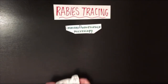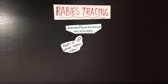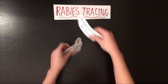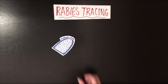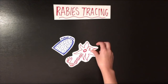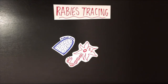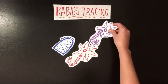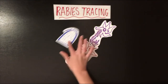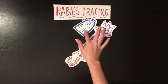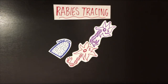Through immunofluorescence microscopy, monosynaptic rabies tracing involves using a genetically modified rabies virus which spreads slowly from one initial cell to the cell's pre-synaptic partner — the one before it — and stops, effectively lighting up individual connections.